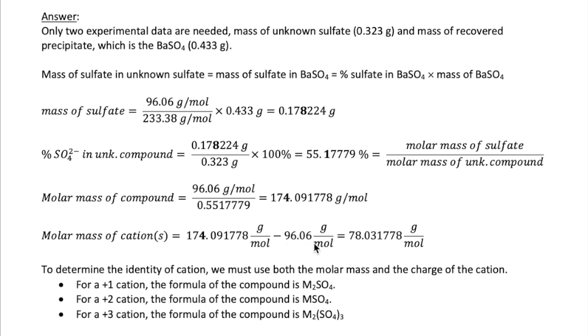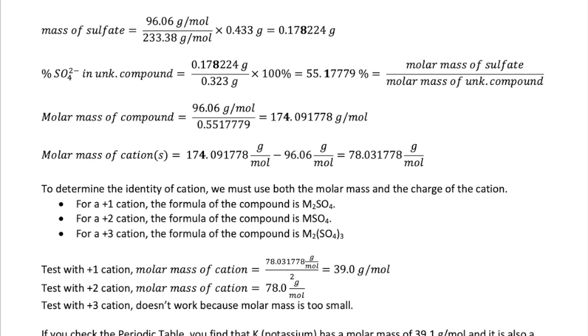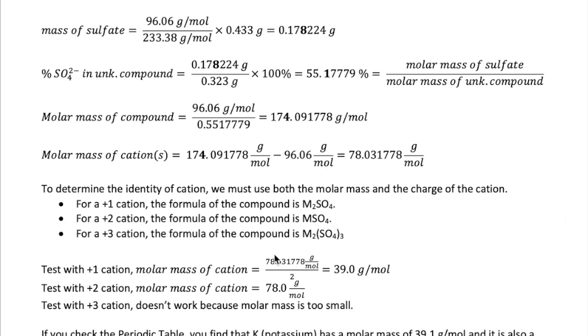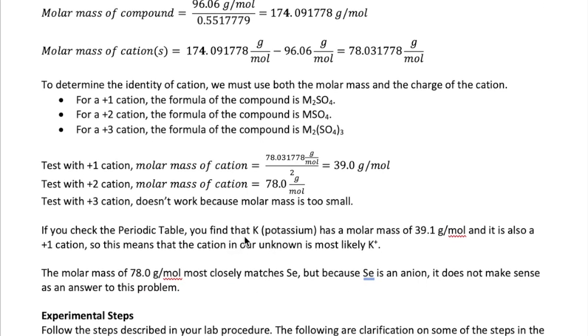From there, we can subtract out the sulfate to get the molar mass of just the cations, which is 78.031778 grams per mole. Now, to determine which cation we have, we need to use both the molar mass and the charge of the cation. There are three possible cations that we can have, plus 1, plus 2, and plus 3. The formula of the sulfate with each of these types of cations is shown here. If we have a plus 1 cation, then we have two moles of our cation. So, the correct molar mass must be half of the number that we get. In other words, it's 39.0 grams per mole. If we have a plus 2 cation, the molar mass would just be the number that we get, which is 78.0 grams per mole. If we try to use a plus 3 cation, it won't work in this case because the total molar mass we have is too small to account for all the elements in there. So, the only options are either a plus 1 or plus 2 in this particular example.